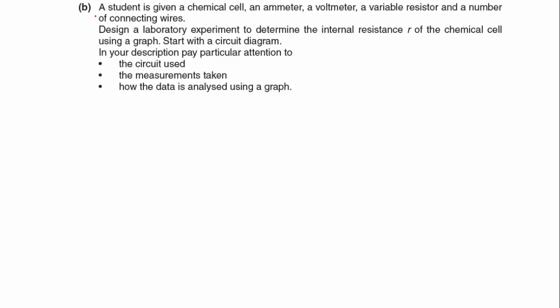Okay, in part b then, a student is given a chemical cell, an ammeter, a voltmeter, a variable resistor, and a number of connecting wires. Design a laboratory experiment to determine the internal resistance r of the chemical cell using a graph. Start with a circuit diagram. In your description, pay particular attention to the circuit used, the measurements taken, and how the data is analyzed using a graph. Well, they're saying start with the circuit diagram, I'm going to do that bit last because what I want to look at is the analysis.